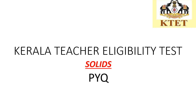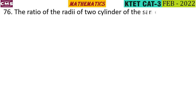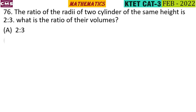The ratio of the radii of two cylinders of the same height is 2 is to 3. What is the ratio of their volume? At the same height, the radius ratio is 2 is to 3. How do we find the volume?